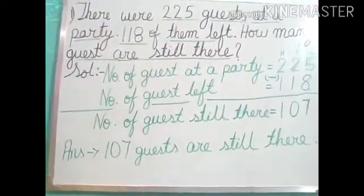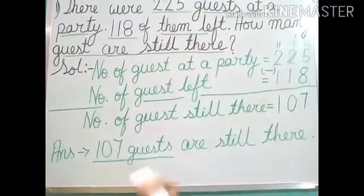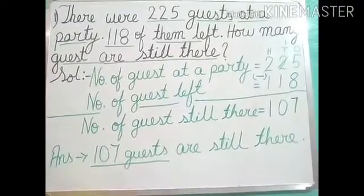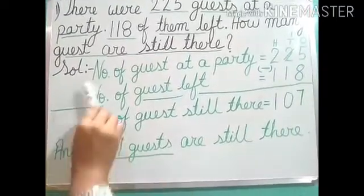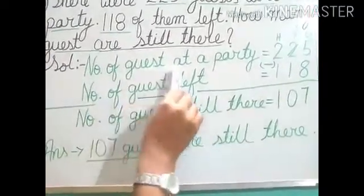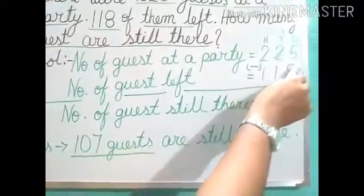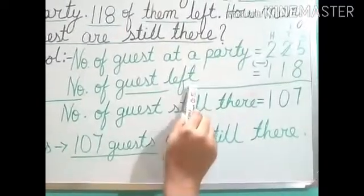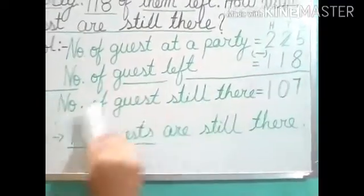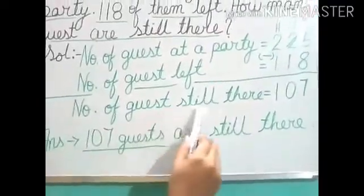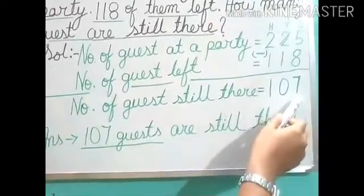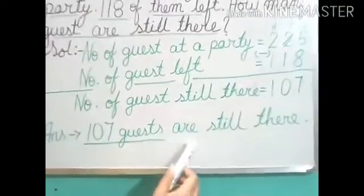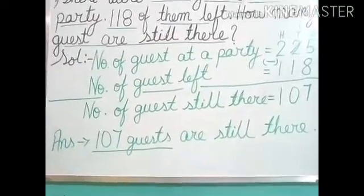You can underline the answer part, as I told you earlier. Let us review from the first: number of guests at a party — 225. Number of guests left — 118. Number of guests still there — we did the subtraction. And the last part: 107 guests are still there.